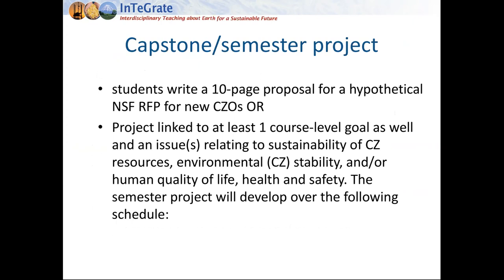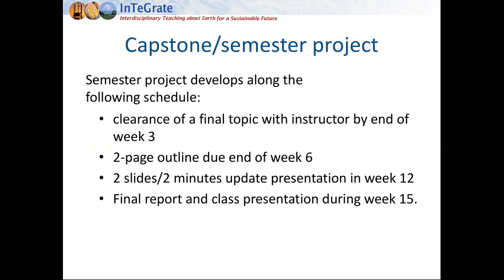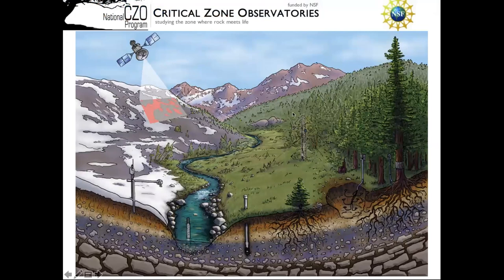The semester project involves students writing a 10-page report in the form of one of two possibilities: either a proposal for a new CZO in response to a hypothetical request for proposals from NSF, or a project linked to one of the course-level goals related to sustainability of critical zone resources, environmental stability, or human quality of life, health, and safety. To keep things on track, there is a strict timeline: clearing the final topic by the end of week three, an outline due by the end of week six, lightning presentations in week 12, and the final report and class presentation during week 15.